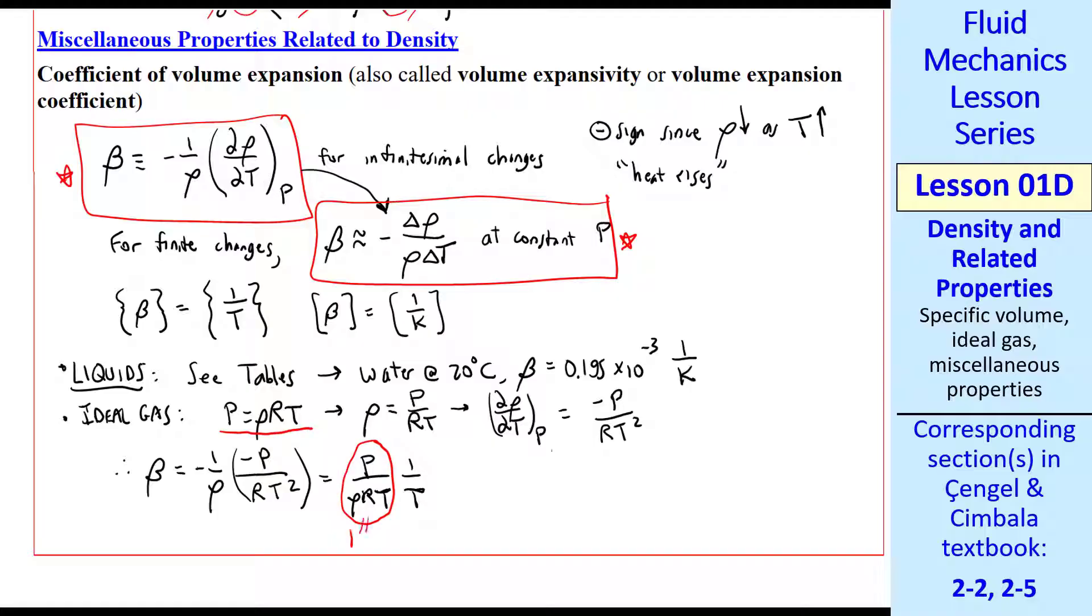So obviously beta is not a constant. It varies with temperature. There's a related property called coefficient of compressibility. We give it the symbol of a Greek letter kappa. It's defined as rho del p del rho at constant temperature.